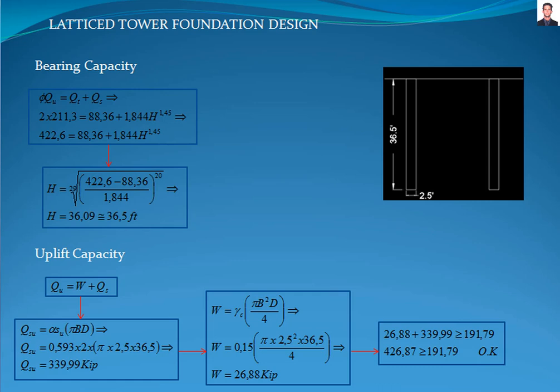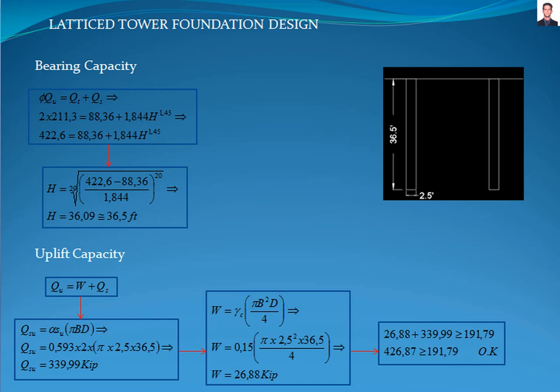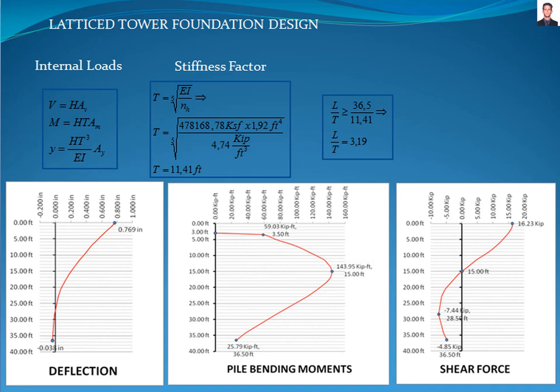The next step is to verify the uplift capacity of the pile using the equation from section 5.3.2.1 of the IEEE 691 standard. Where Q_uplift is the uplift resistance, W is the weight of the shaft, and Q_s is the skin resistance of the shaft, calculated with this equation where d_b are the dimensions of the pile, resulting in 340 kilopounds. The weight of the pile is 26.88 kilopounds. Making the comparison with the uplift force from the analysis, the verification passes.